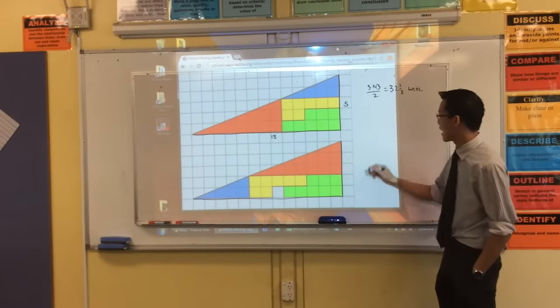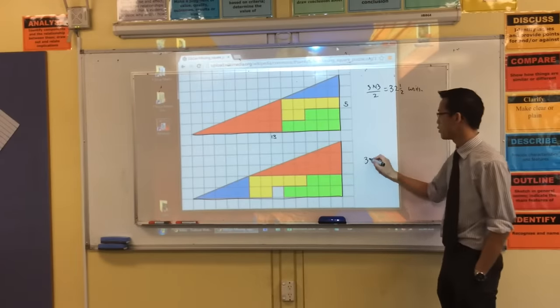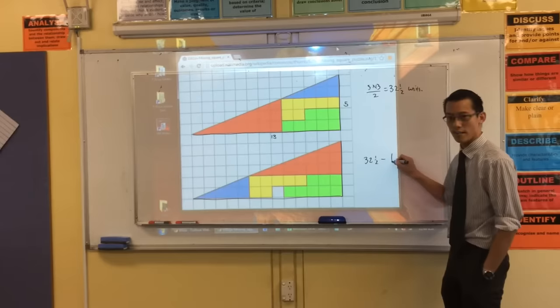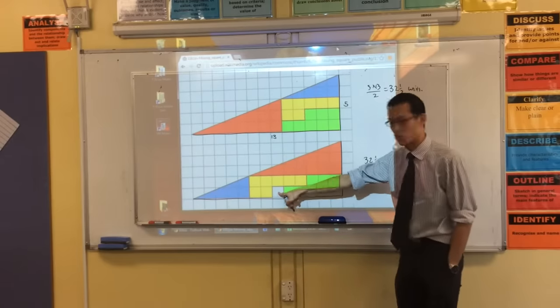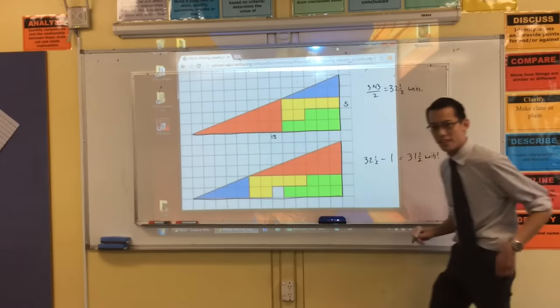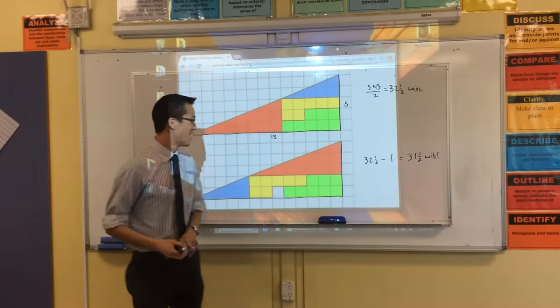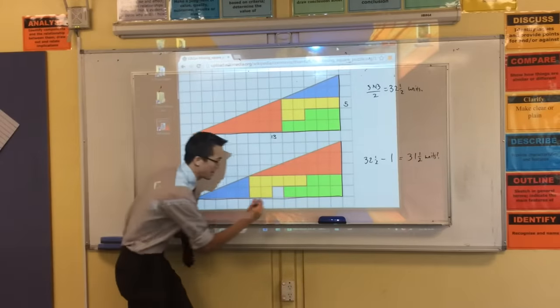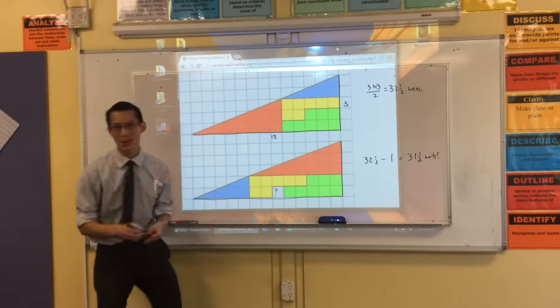But then you have a look at this thing, and you're like, well, it's going to be that 32 and a half units minus 1. Because there's something which isn't covered by a colored thing, right? So how is it that just by rearranging, we have made a square disappear? Okay, take it.